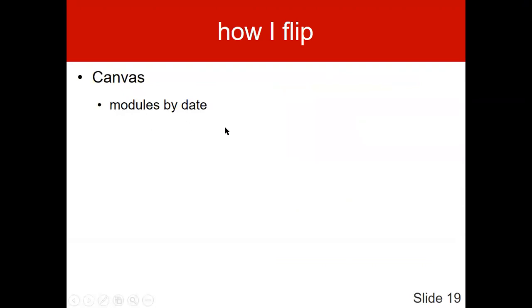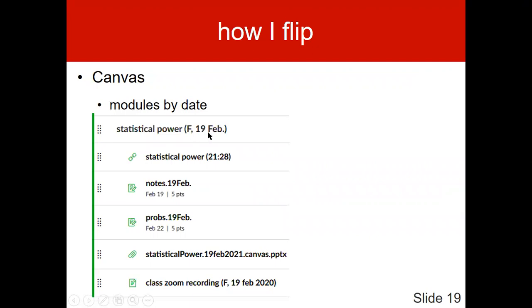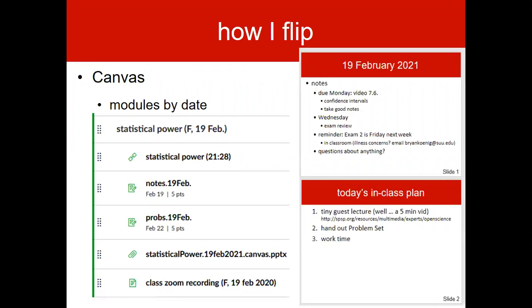My syllabus has videos they can click on that bring them to the YouTube video, and they're also in Canvas so they can access them however they want. I organize my Canvas modules by date. We just had February 19th with statistical power: a 22-minute video on statistical power, which is a really hard topic, but students can rewatch parts. Five points for notes, five points for the problem set. I put my PowerPoints on Canvas after class. My PowerPoints used to be 20 slides every day, and now they're just these two slides — I go in, show where we are as a class, play a relevant expert video, then students start working on the problem set.